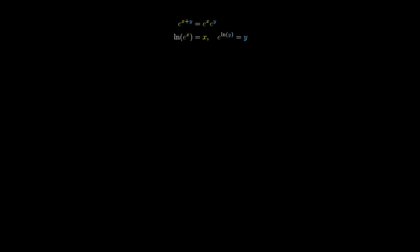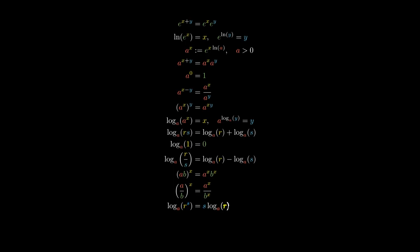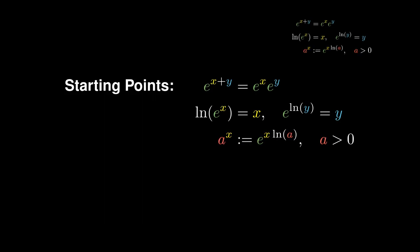Before you is a list of essentially every exponential or logarithmic identity that you will need to know in an algebra course. In this video, we are going to prove every single one of these identities one at a time. We need to establish some starting points, such as the fundamental exponential identity that converts addition into multiplication, and the inverse of the exponential known as the natural logarithm, which essentially reverses the effect of the exponential. We will also define the exponential of a general base a in terms of the natural exponential and the natural logarithm.